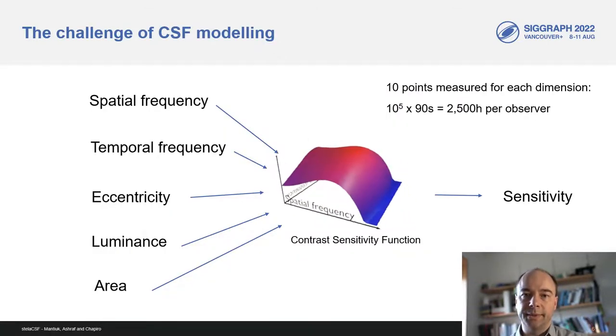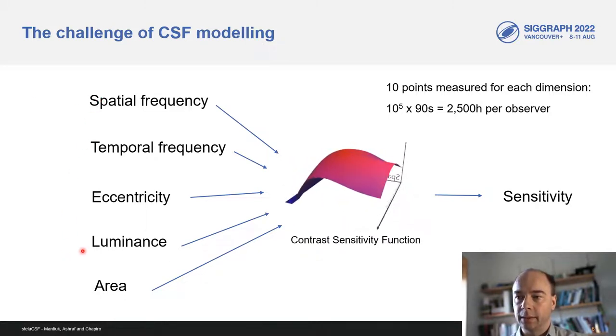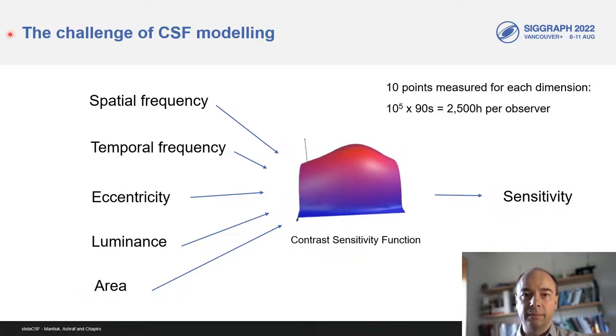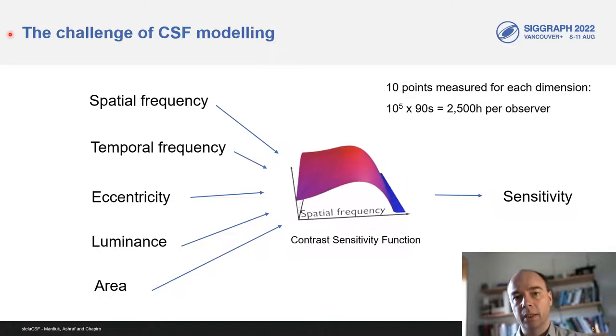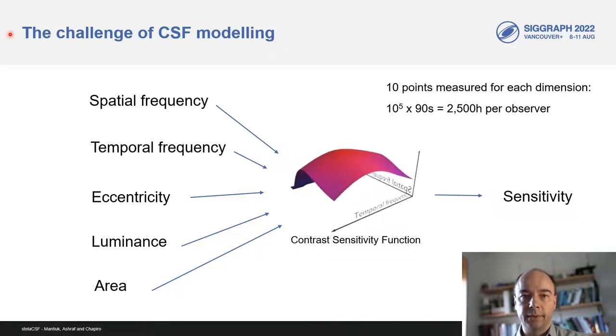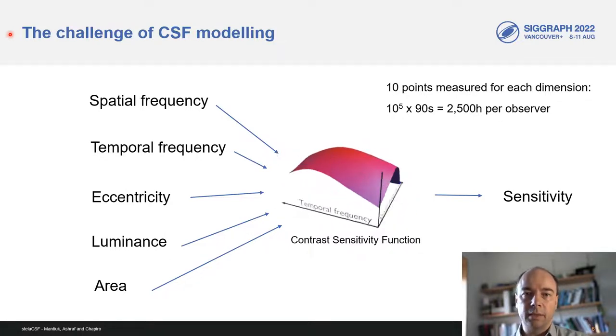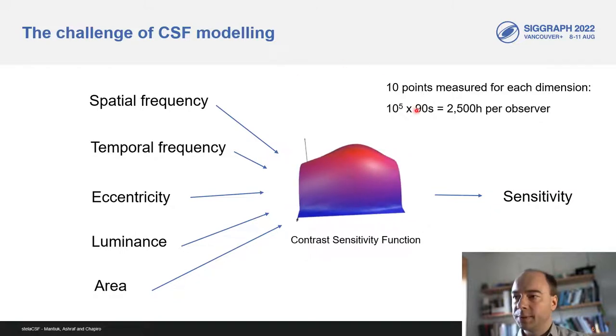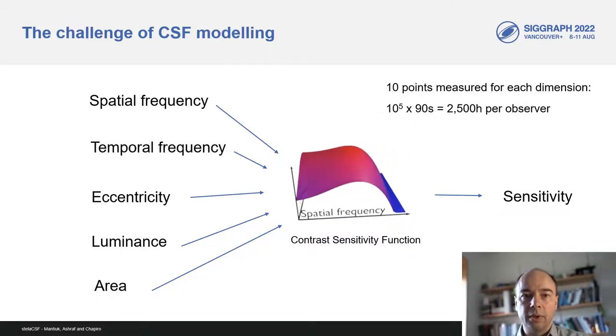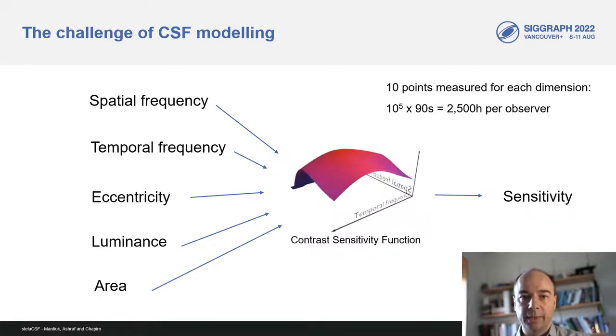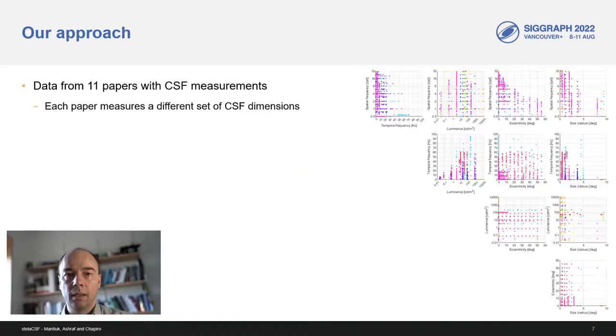In this project, we wanted to model CSF as the function of five parameters: spatial and temporal frequency, eccentricity, luminance, and area. Those are the parameters that are most relevant for applications, especially in AR and VR. There is no existing well-established CSF model that accounts for all these dimensions. The main challenge is how to get enough data. If we were to measure just 10 points across each dimension, each observer would take one year to measure the entire space, and this is clearly infeasible.